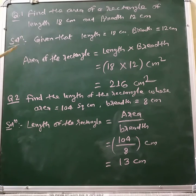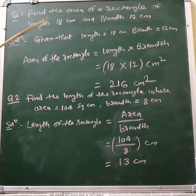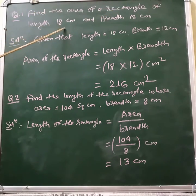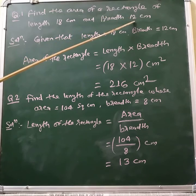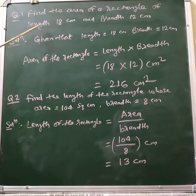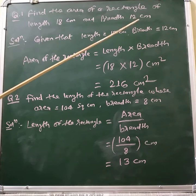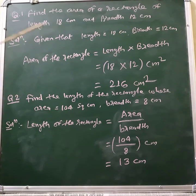Hello everyone, today we will take some examples on area of a rectangle. Question: find the area of a rectangle of length 18 centimeter and breadth 12 centimeter. Solution — given that length of rectangle is equal to 18 centimeter and breadth of rectangle is equal to 12 centimeter. We know the formula of area of the rectangle.